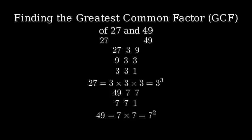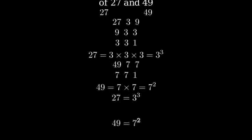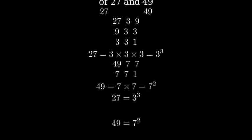Now that we have both numbers broken down into their prime factors, let's compare them. 27 is 3 cubed, while 49 is 7 squared. Looking at these prime factorizations, we can see that 27 and 49 share no prime factors in common.